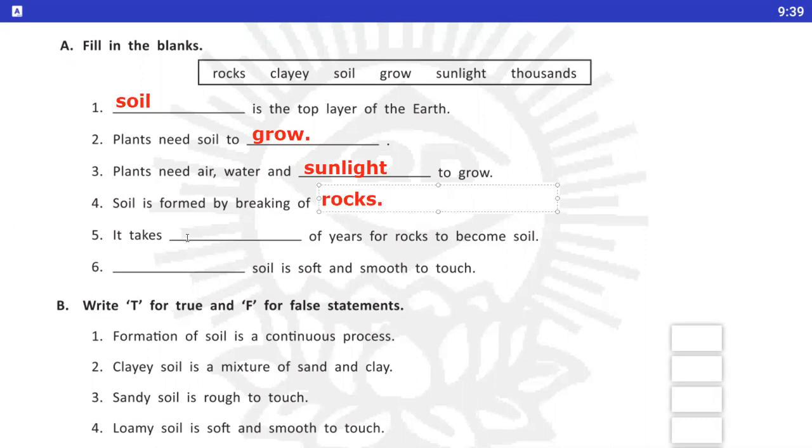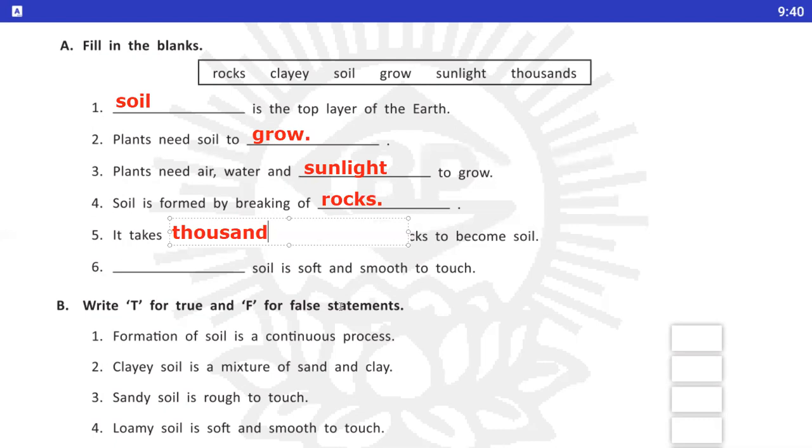Number 5, It takes dash of years for rocks to become soil. Soil ko kitnay saal lag jate hai? Rocks se soil mein convert hoonay ke liye? Thousands. Number 6, Dead soil is soft and smooth to touch. Kis type ki soil touch karne mein soft and smooth hooti hai? Clay soil.